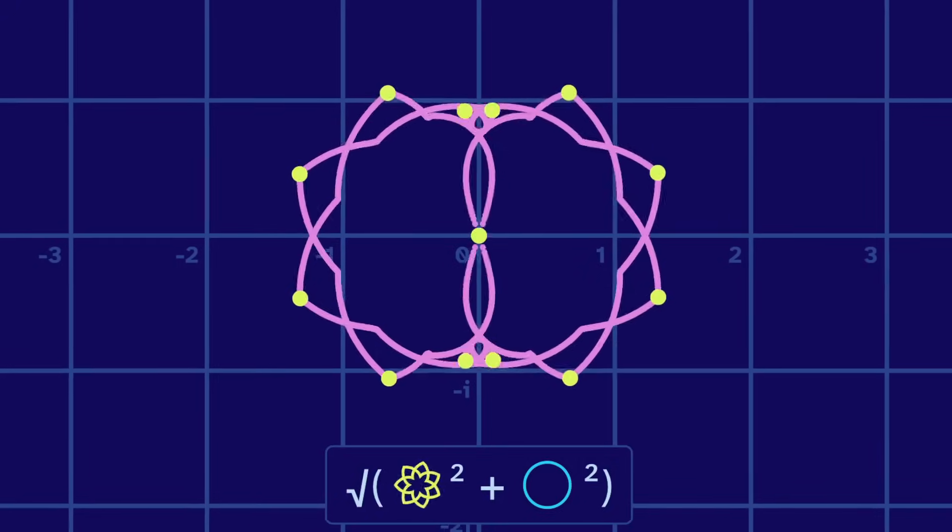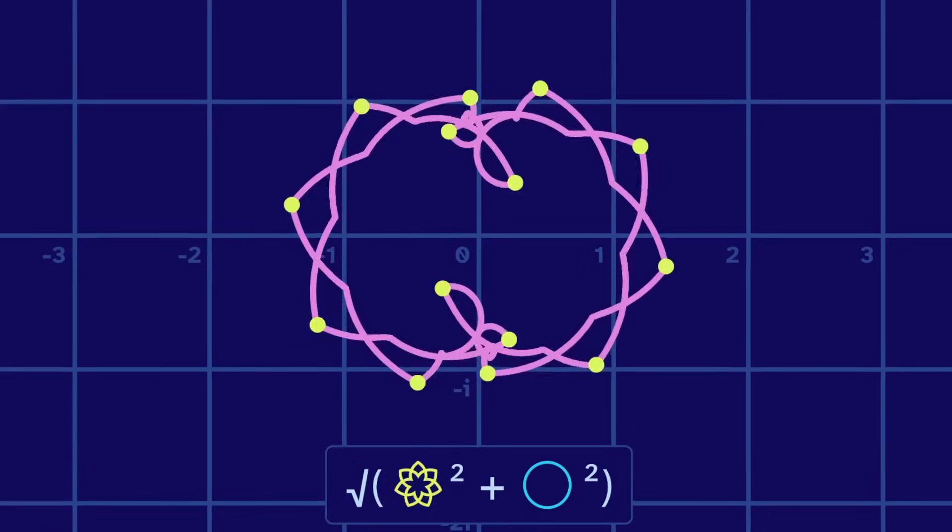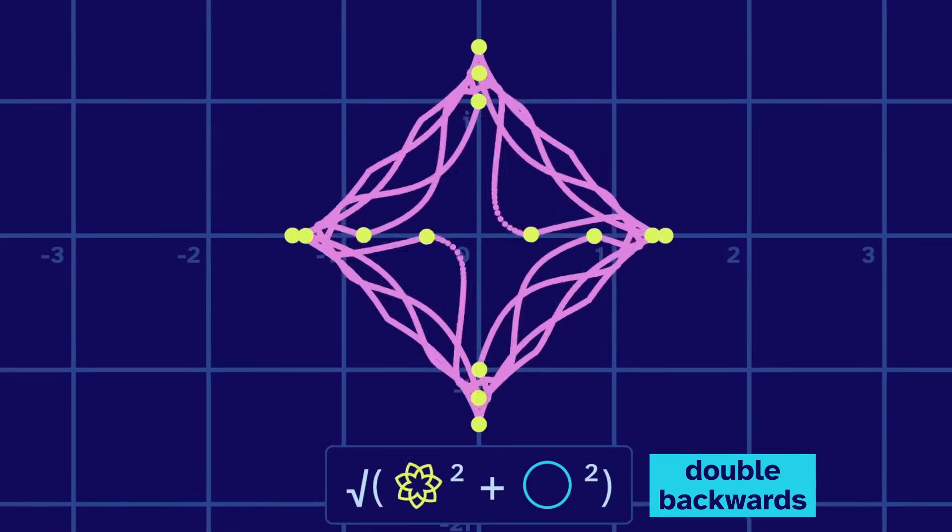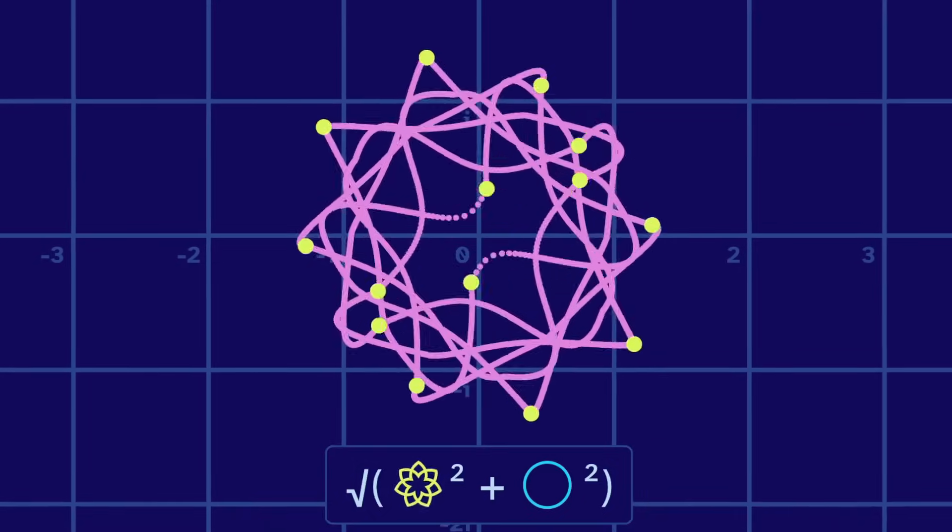Here we use a spinning flower and a circle. But we could make it a backwards circle. Or a double backwards circle. Or a triple backwards circle.